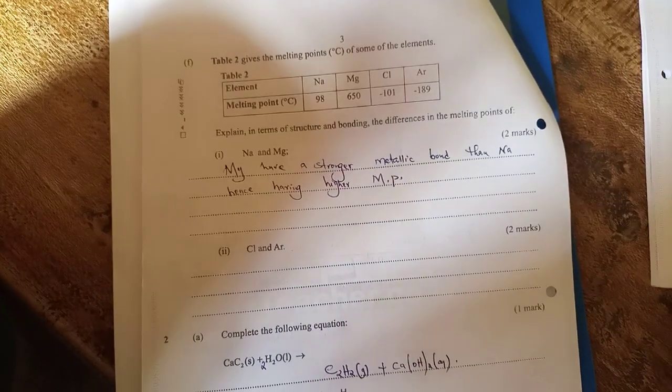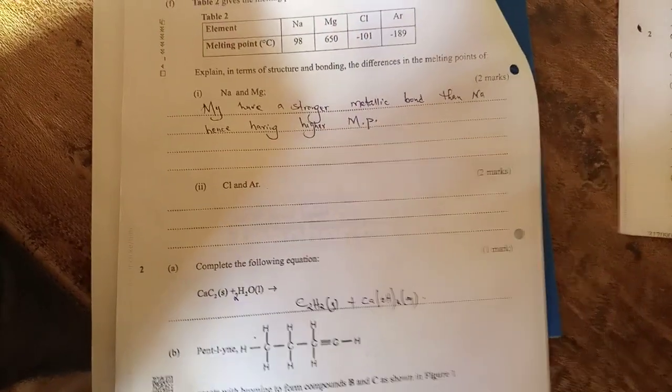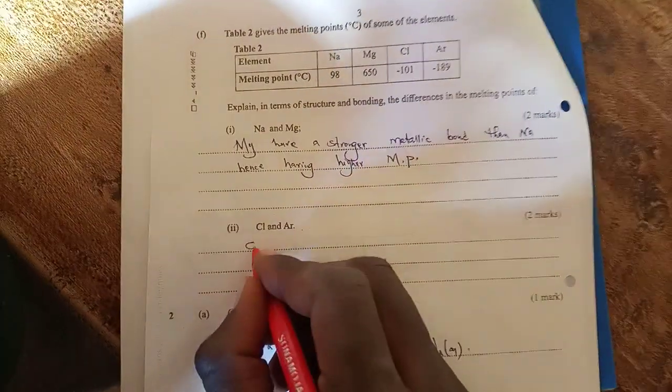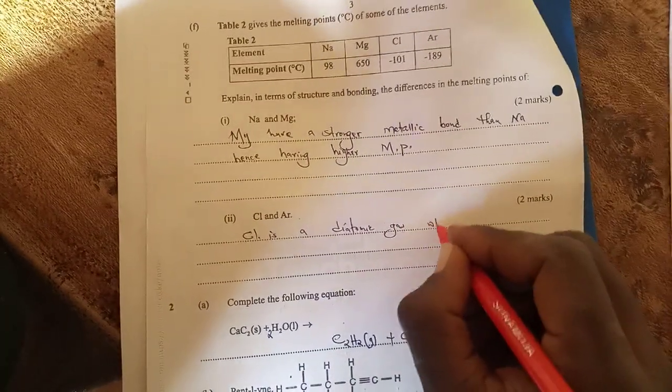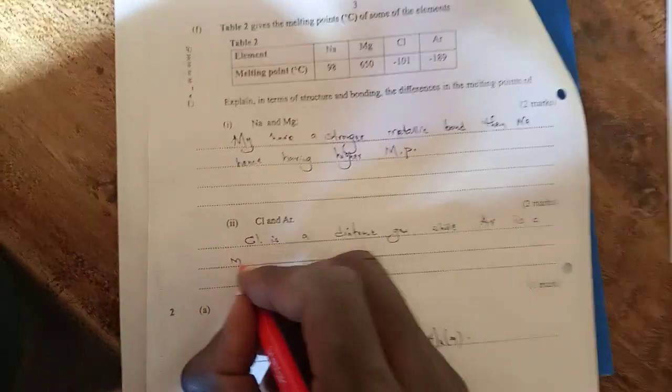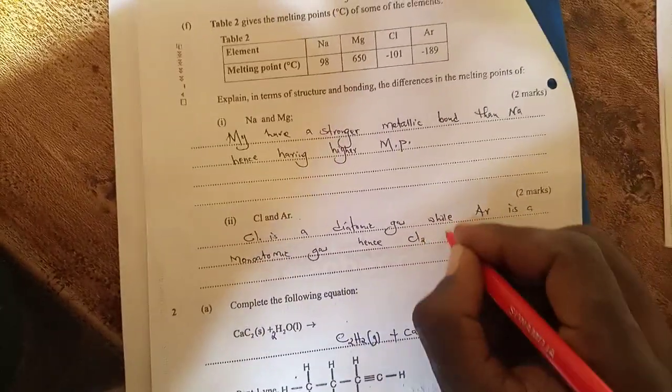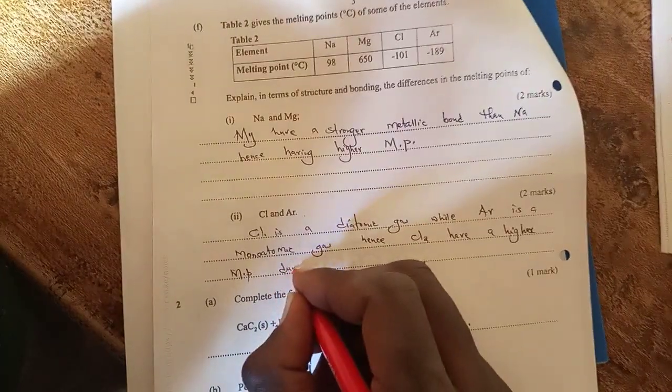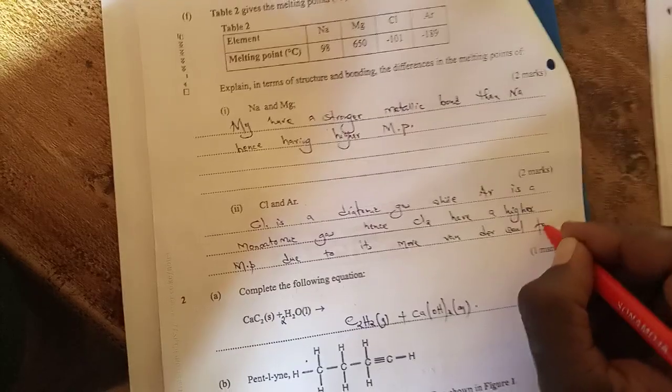Next is chlorine and argon. This is answered by referring to their existence. Chlorine exists as a diatomic gas. Argon is a monatomic gas. Diatomic gases have more van der Waals forces compared to monatomic gases. Chlorine is a diatomic gas while argon is a monatomic gas. Hence, chlorine has a higher melting point due to its stronger van der Waals forces.